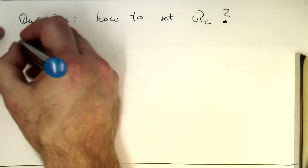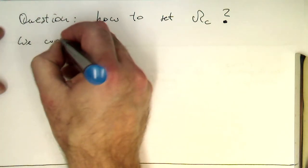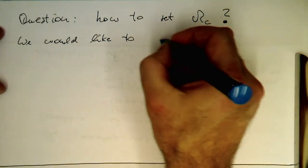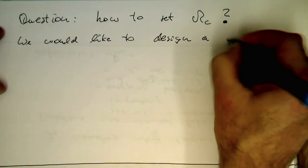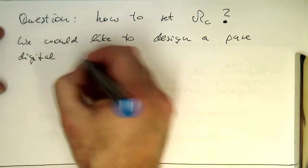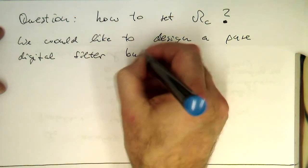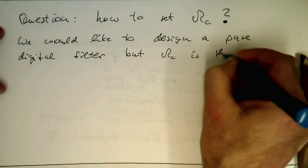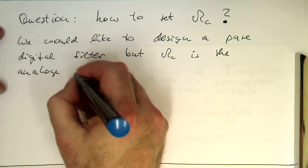Because obviously what we would like to do is we would like to design a pure digital filter, but omega_c is the analog frequency.